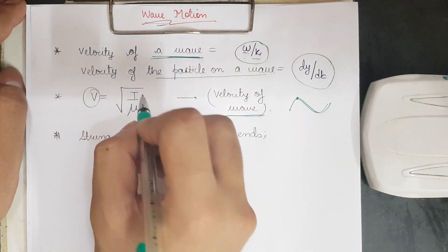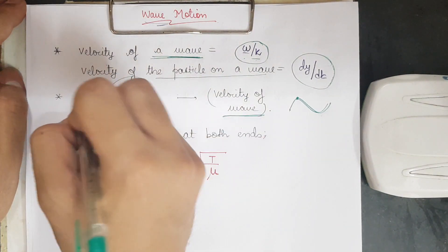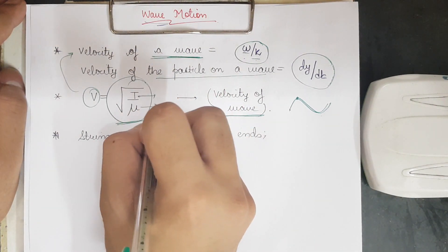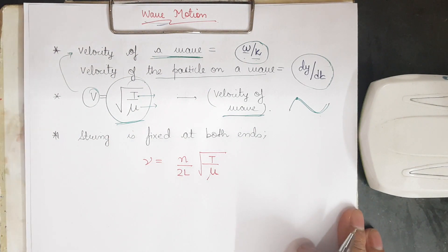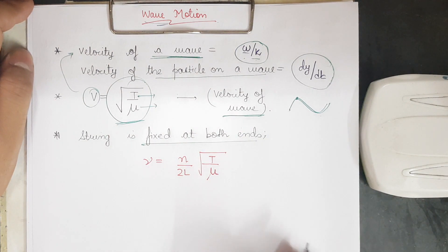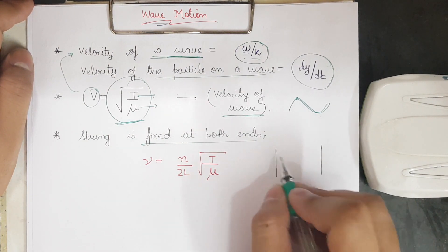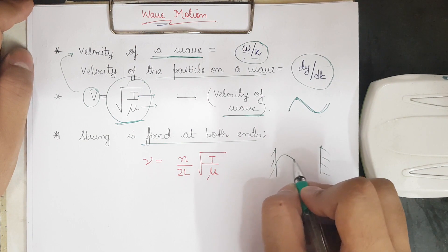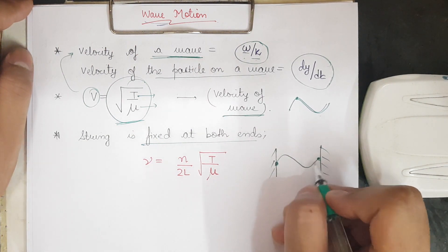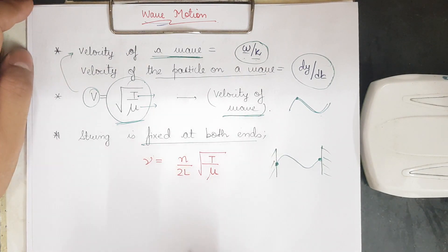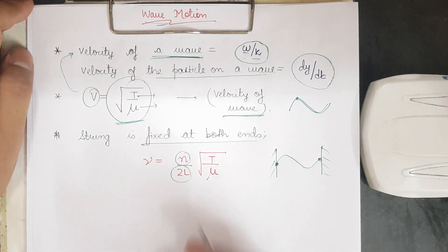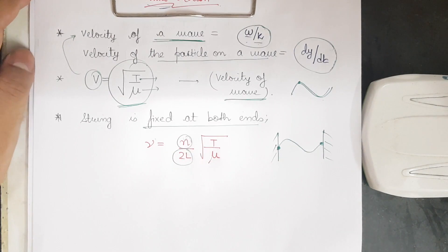The wave velocity is also given by √(T/μ), where T is the tension and μ is the mass per unit length. When a string is fixed at both ends, the frequency is given by n/(2L) × √(T/μ), where n is the harmonic number and L is the length of the string.